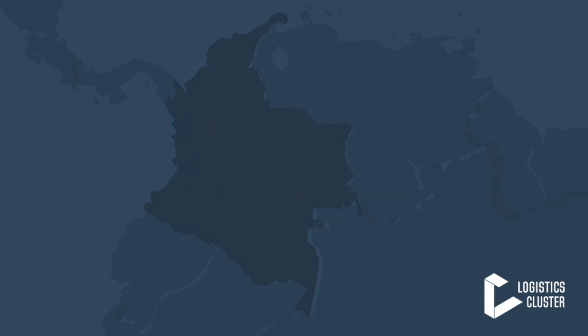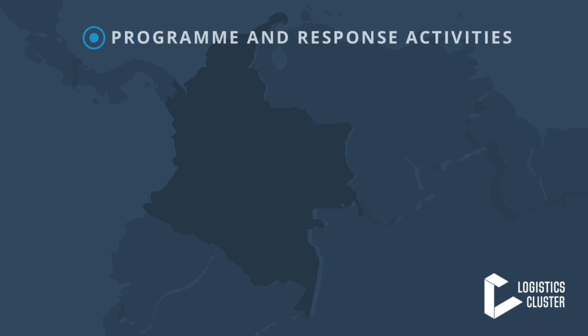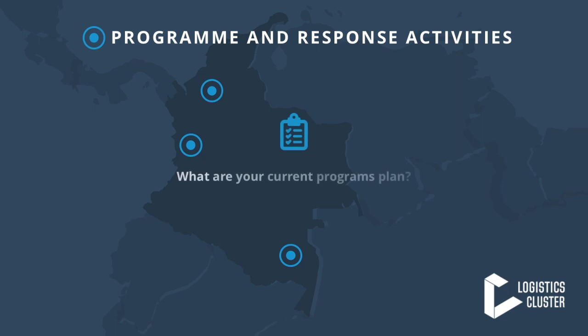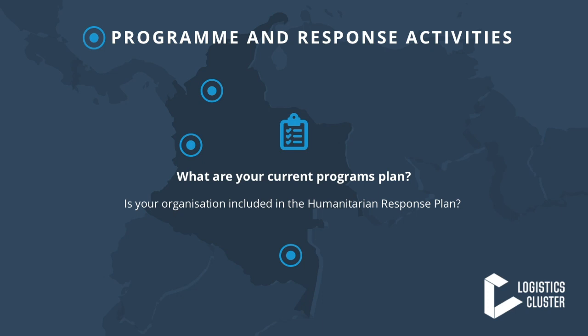The first piece of information needed for the GNA is an overall vision of the programmatic activities of your organization. Consider the following two questions: in which locations are you operating, and what type of activities are you planning or implementing? Provide as many details as possible to ensure the GNA understands the scope of your programs and the planned response. References to the humanitarian response plan are encouraged if possible.